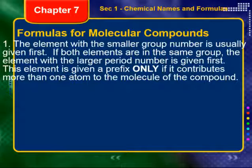When it comes to picking which element comes first, the element in the smaller group number is usually given first. That's the same as saying further to the left in the periodic table, which is the same as lower electronegativity, which is also the same as the more metallic. If both elements are in the same group, the element with the larger period number is given first. The first element is given a prefix only if it contributes more than one atom to the molecule.